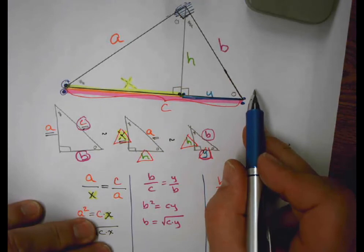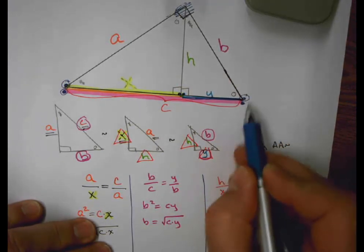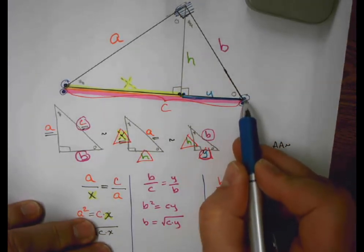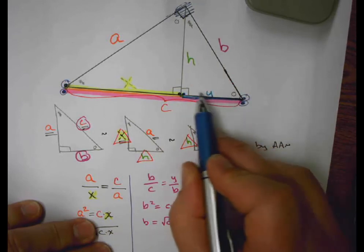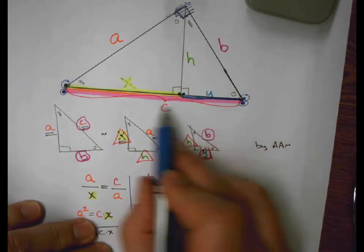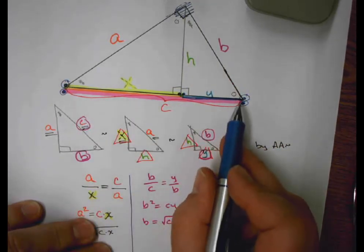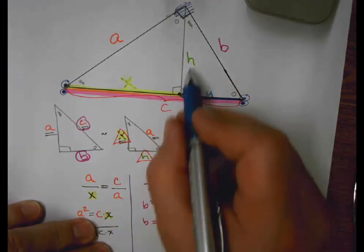B, on the other hand, is the geometric mean of the two segments whose end points it touches, Y and C. Notice that it doesn't really touch an end point of X.